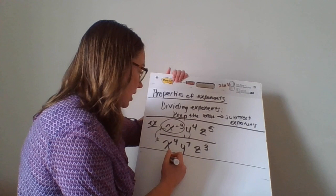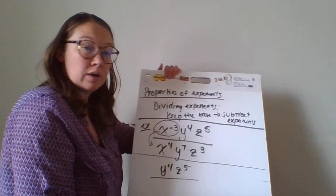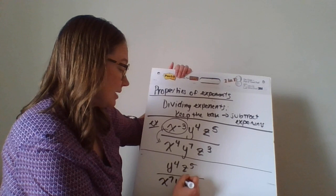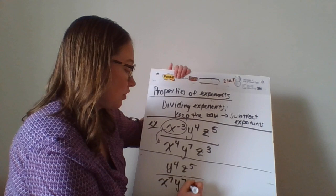So I'm going to rewrite this problem as y to the fourth. This is going to be y to the fourth, z to the fifth over, well, I already had four down here, and I'm moving three more. So now I'm going to have seven x's on the bottom. I still have seven y's on the bottom. And I have three z's on the bottom.